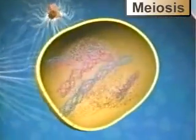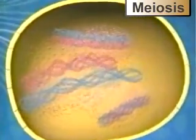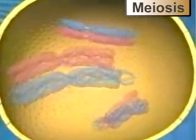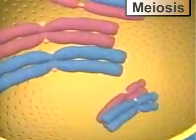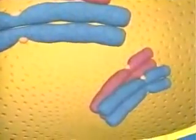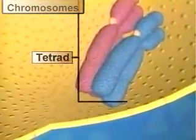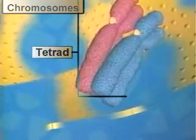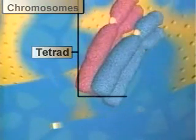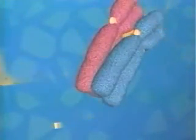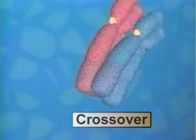In meiotic division, replicated or copied homologous pairs exist in what we call a tetrad, which refers to the four chromatids. During the formation of these tetrads, a form of genetic shuffling known as crossing over occurs.